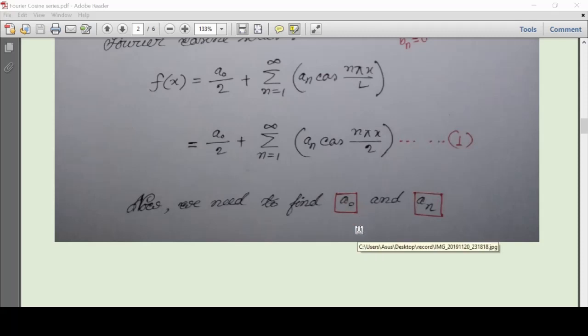At the same time, when you all were trying to find a_0 by using half-range formula, you found a_0 to be 4 by 3. So where is the problem?